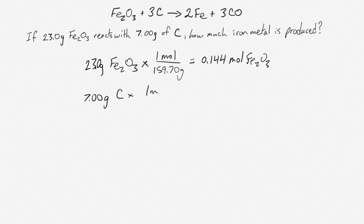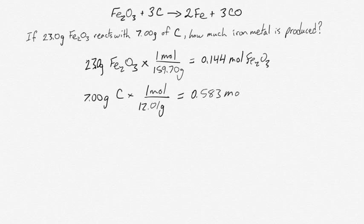And our 7 grams of carbon, we can find the moles of that the same way. One mole of carbon has 12.01 grams, which means our 7 grams of carbon contains 0.583 moles of carbon.